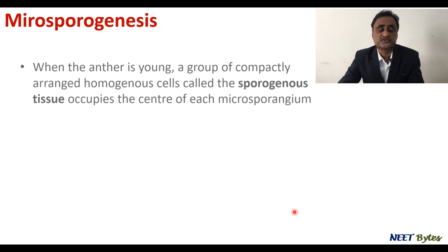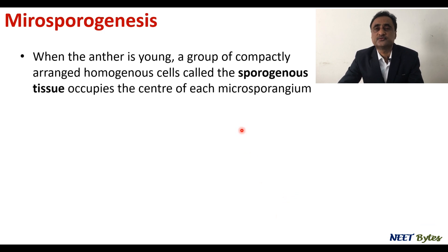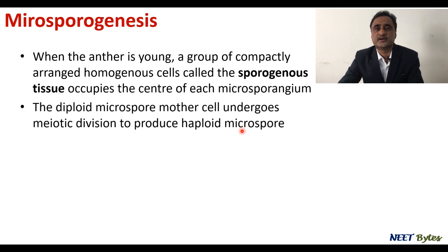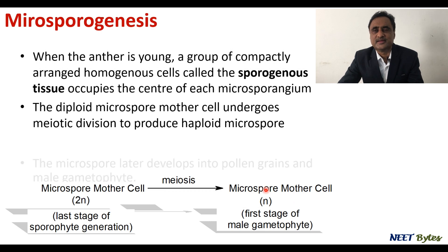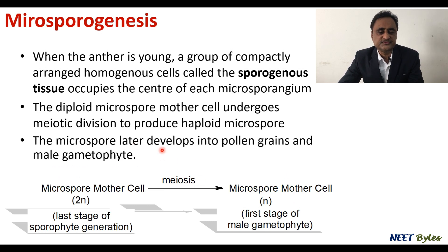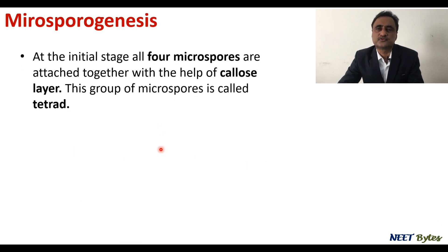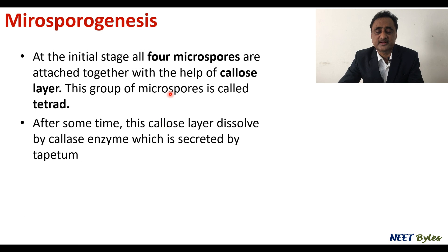In microsporogenesis, the starting point is the diploid microspore mother cell, which undergoes meiotic division to form haploid microspores, as seen in the diagram. These microspores later develop into pollen grains and the male gametophyte. At the initial stage, all four microspores are attached together.